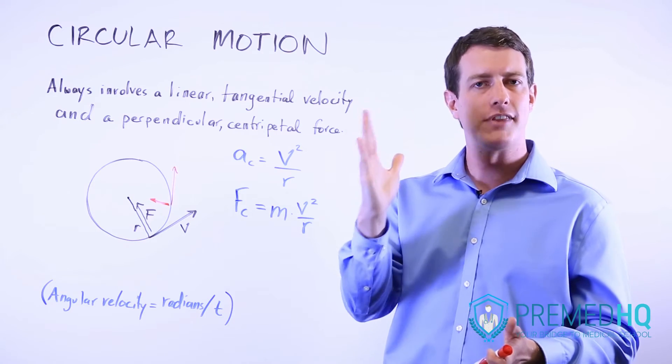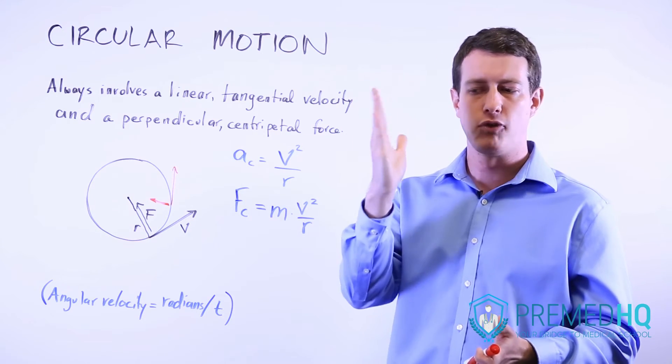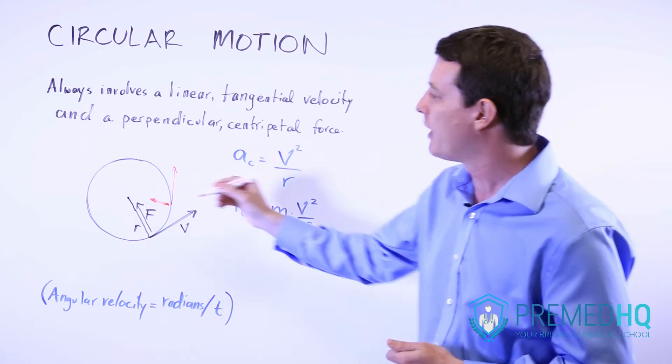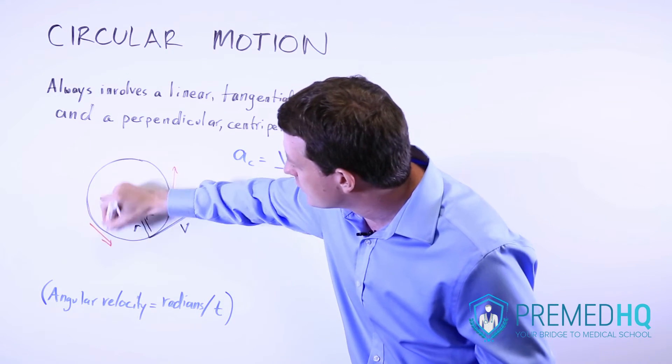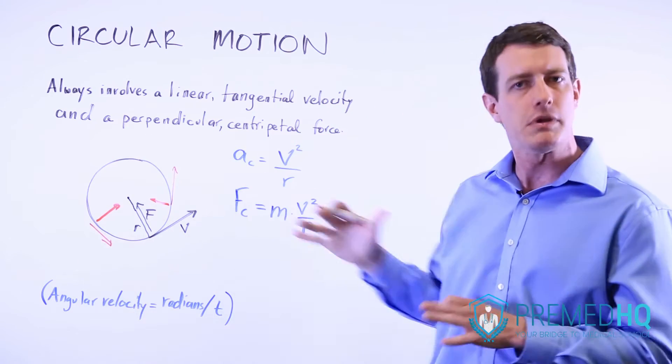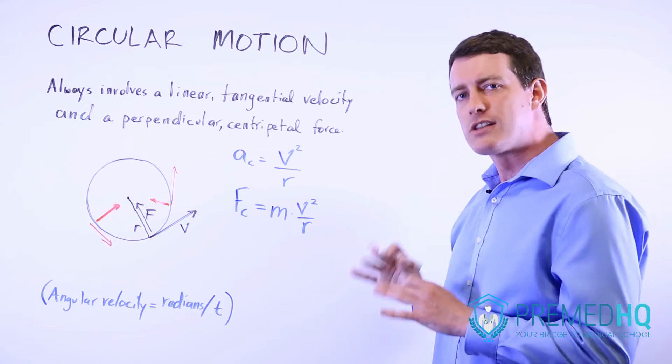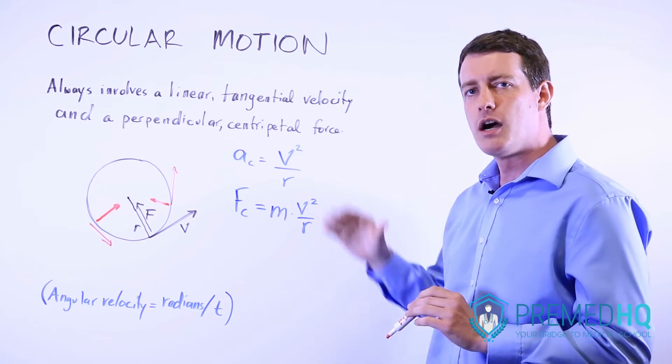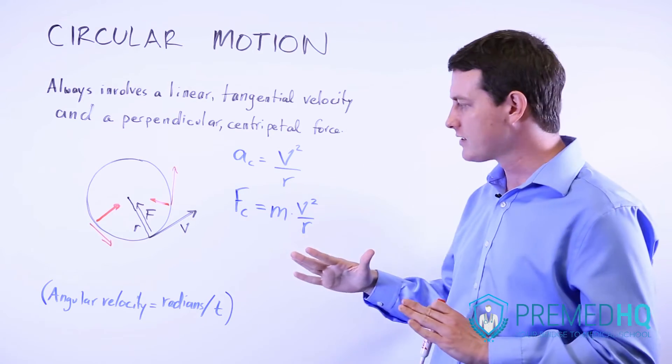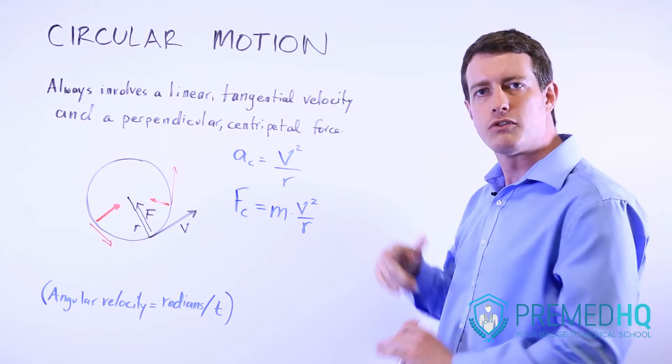The tension force of that rope is creating the force, and notice that the force will always be perpendicular no matter what stage of the swing the character is on. So whenever you see circular motion, start thinking about the centripetal force, which is always perpendicular to the velocity, and it's good to know these two formulas.